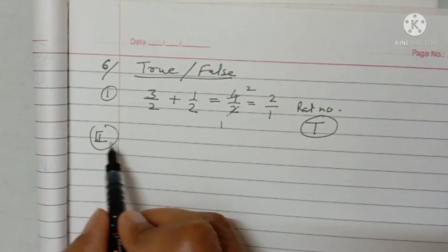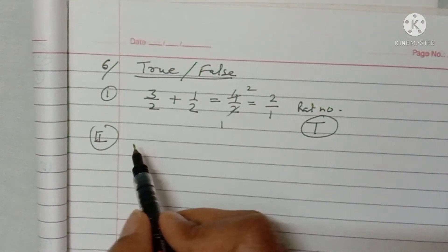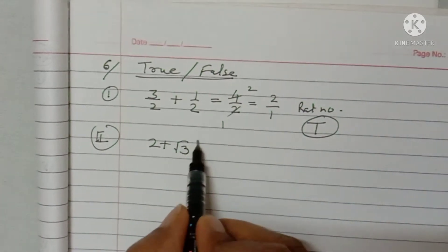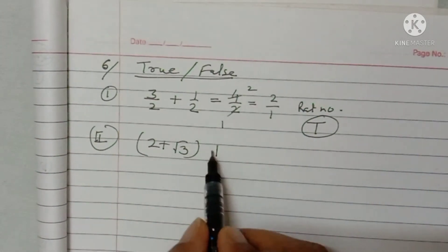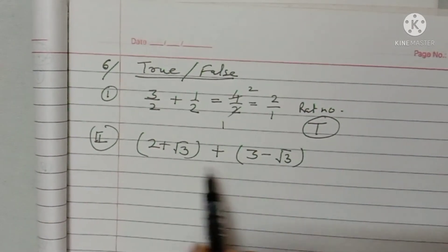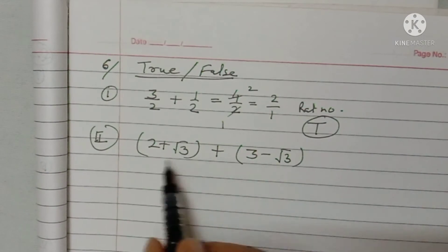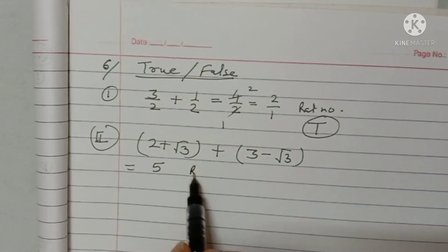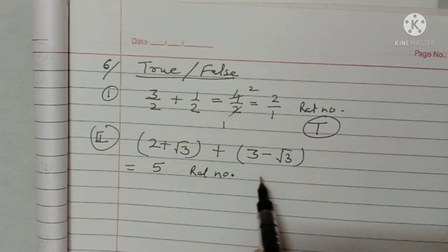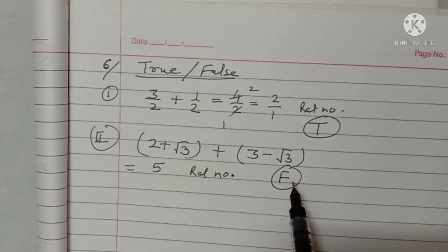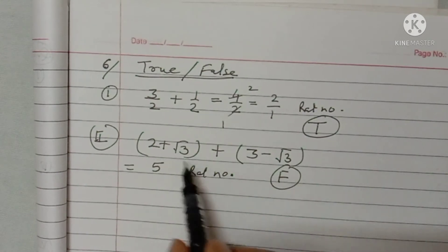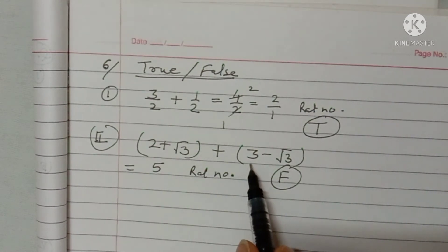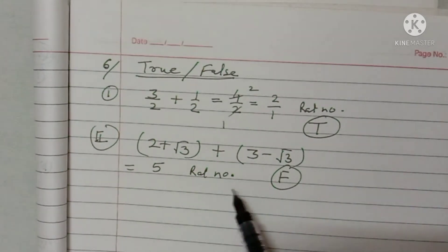Second: the sum of two irrational numbers is irrational. Take two irrational numbers: (2 + √3) + (3 − √3). The √3 terms cancel, giving 5, which is a rational number. So this statement is false — it is not necessary that the sum of two irrational numbers will be irrational; it may be rational or irrational.